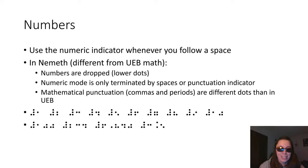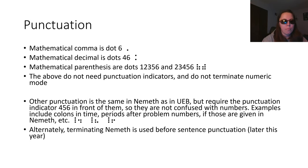So that means that the dot 6, when it's following a numeric indicator, means a comma in math. The dot 4, 6 means a period, specifically a decimal point. That 4, 6 in the middle of a number, or the 4, 6 following a numeric indicator will always be a decimal point.